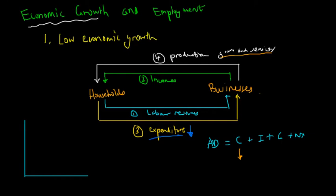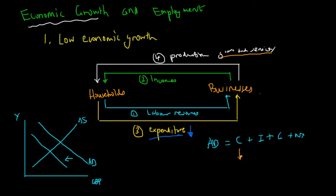Assuming aggregate supply is upward-sloping and demand is downward-sloping — for simplicity only, not representing full reality — when aggregate demand decreases, there is a surplus in supply. At a given price, the quantity supplied exceeds the quantity demanded, creating a surplus. Businesses therefore lower production of goods and services, and as a result economic growth decreases.